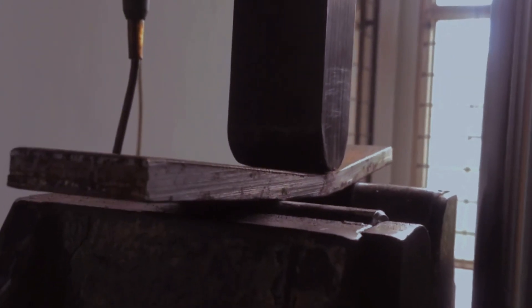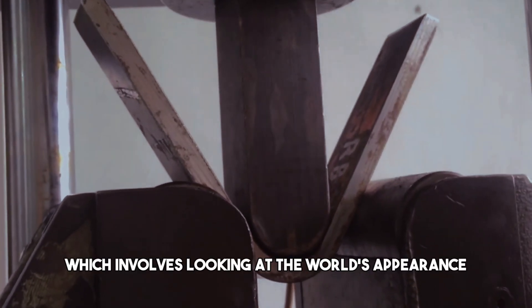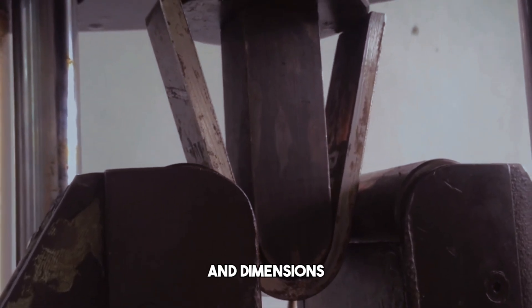There are different methods of inspection and testing, depending on the type and level of information you need. Some methods are visual inspection, which involves looking at the weld's appearance and dimensions.